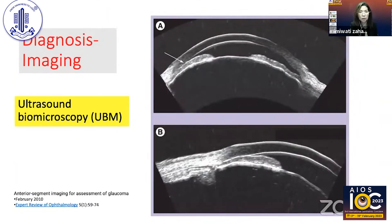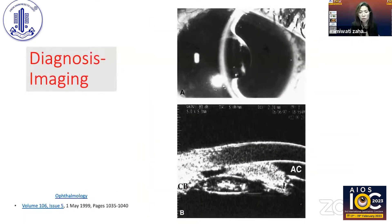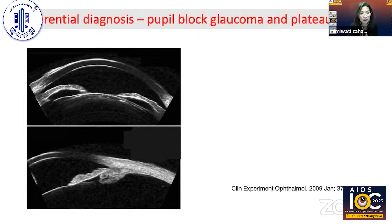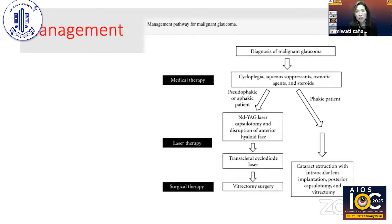Diagnosis is confirmed by UBM, where you can see shallowing of the anterior chamber, iridolenticular touch, and the ciliary body rotated anteriorly. In some cases, ciliary body effusion can also be seen. For differential diagnosis, UBM helps distinguish pupil block glaucoma — where there is iris bombé with aqueous posterior to the iris — and plateau iris, where the iris is flat but the anterior chamber is very deep despite the anterior ciliary body rotation.